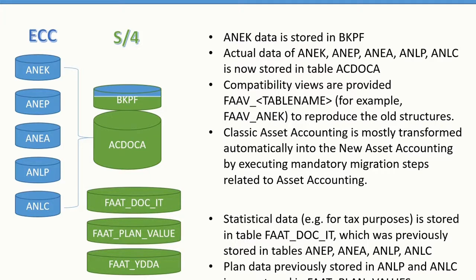Earlier, actual data and statistical data were stored in multiple tables and defined differently across header and line item details. Now, actual data is separated from statistical data. Similarly, planning data is stored separately in the FAAT_PLAN_VALUE table, so all planning data is accessible from one place and doesn't go into ACDOCA. Plan data, statistical data, and actual data are all stored distinctly — from a financial reporting and GL account integration perspective, all actuals come together with no redundancy.